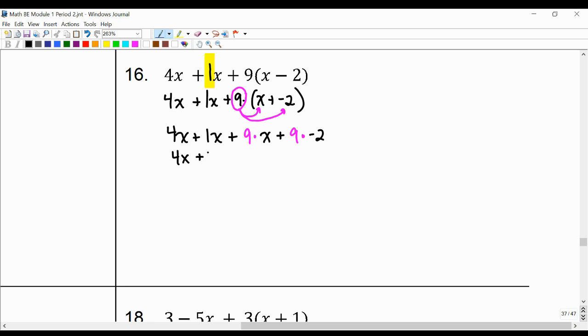We have 4x plus 1x plus 9x plus 9 times negative 2, which is negative 18.